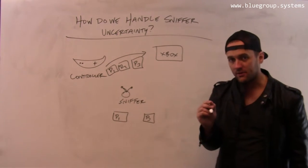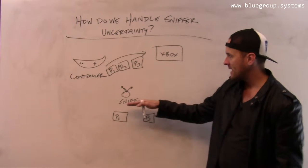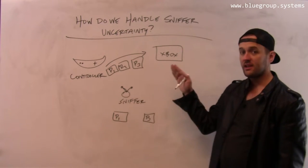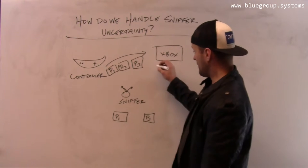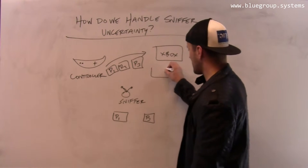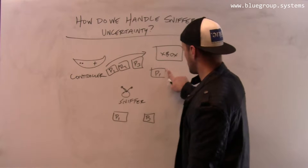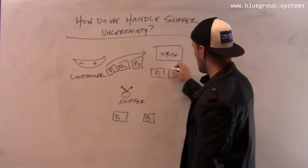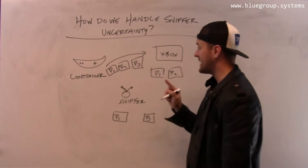Now there's another source of uncertainty. In this case, the sniffer can miss packets that the controller might have received. But there's another source of uncertainty, because it's possible that the controller only heard P1 and P2.